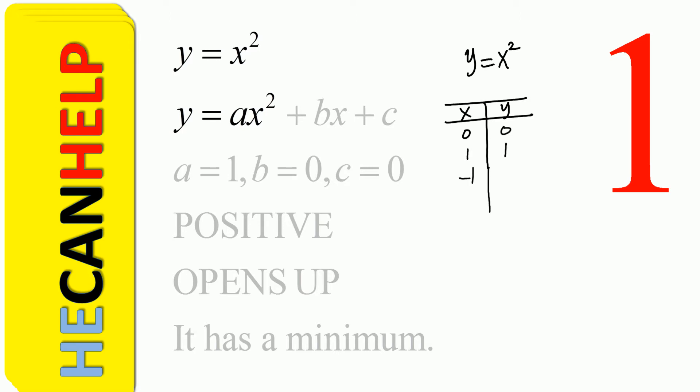When you put x equals negative 1, what happens? Negative 1 to the power of 2, which is negative 1 times negative 1, and that is positive 1.